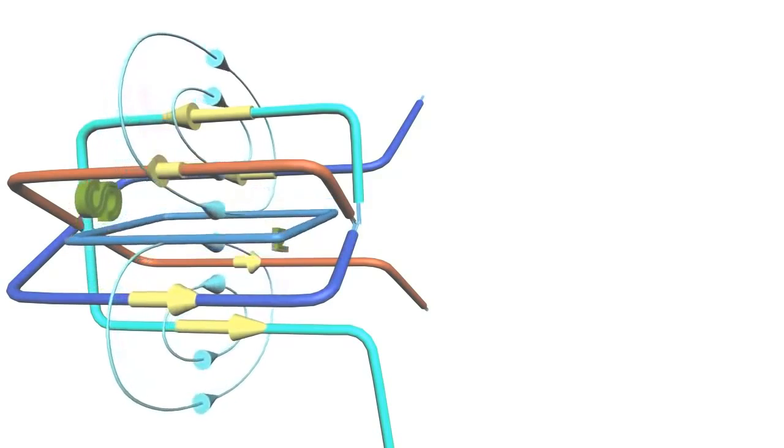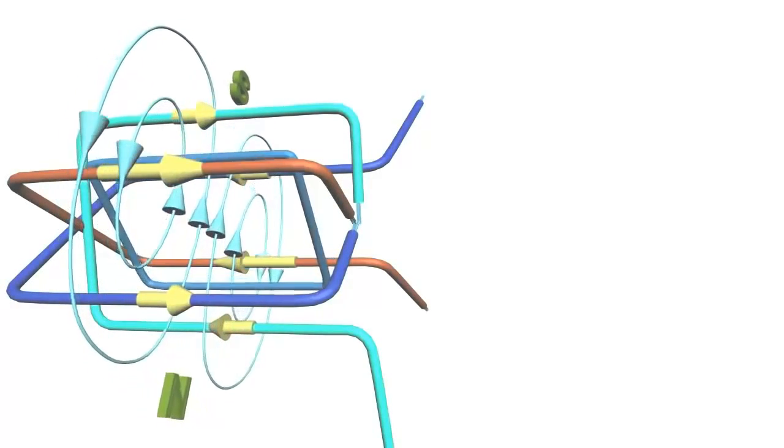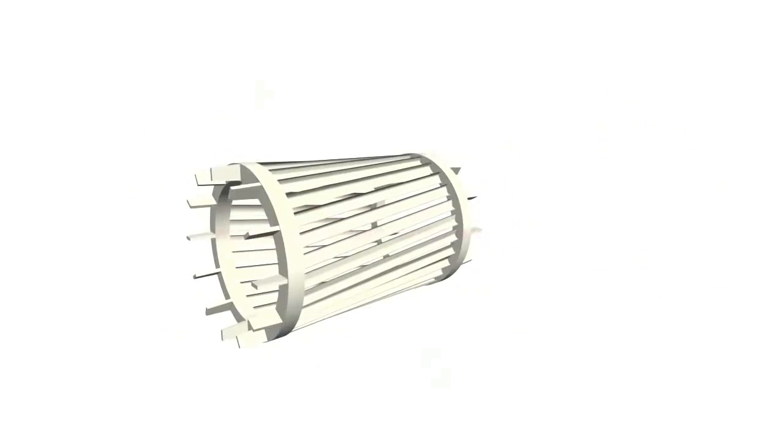So the loop will start rotating. A similar phenomenon happens inside an induction motor also. Here, instead of a simple loop, something very similar to a squirrel cage is used.